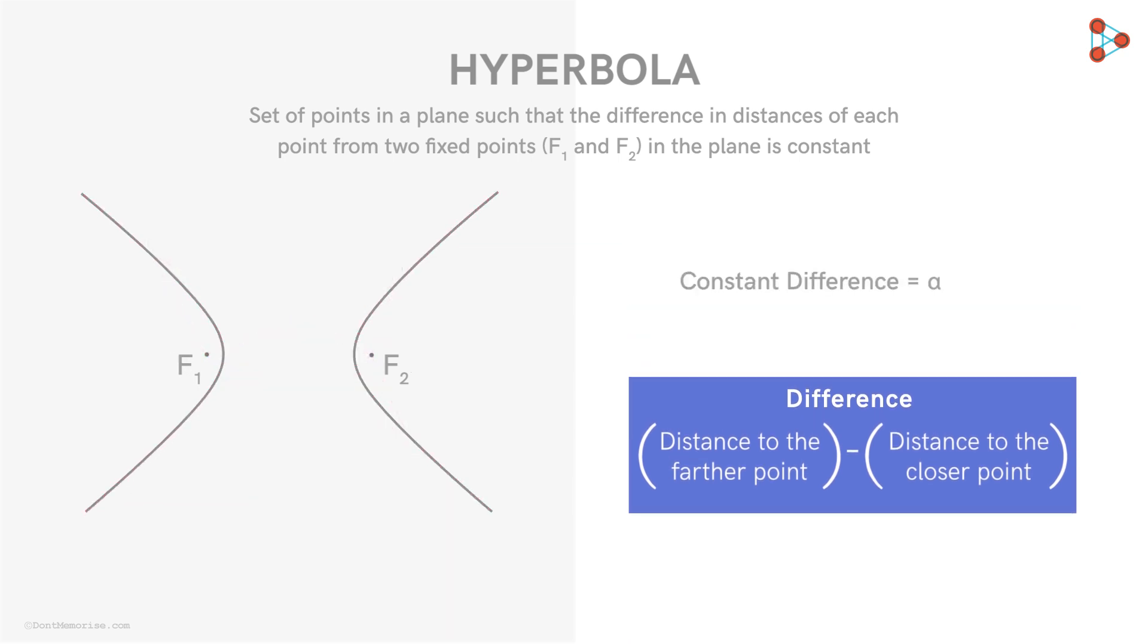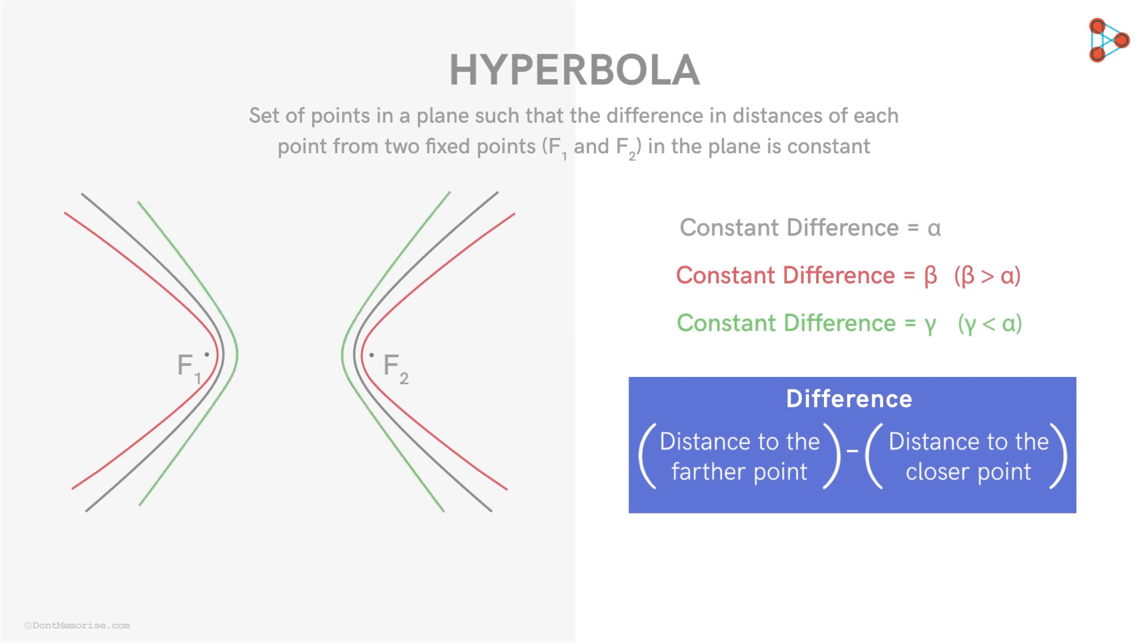Now here we took the constant difference to be alpha. If we take any other number as the constant difference, we will get different hyperbolas. Let's say we take the constant difference to be beta which is greater than alpha. Then we will get this hyperbola which is narrower than the previous one. If we take the constant difference to be gamma, which is less than alpha, then we will get this hyperbola which is wider than the previous one. So we see that depending on the value of the constant, the hyperbola becomes narrower or wider.